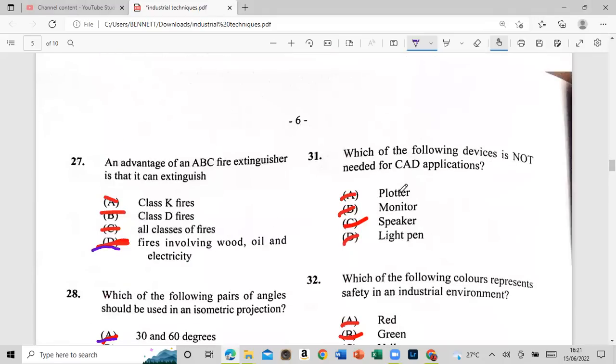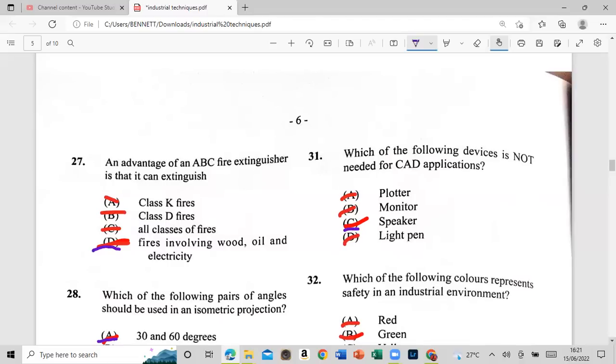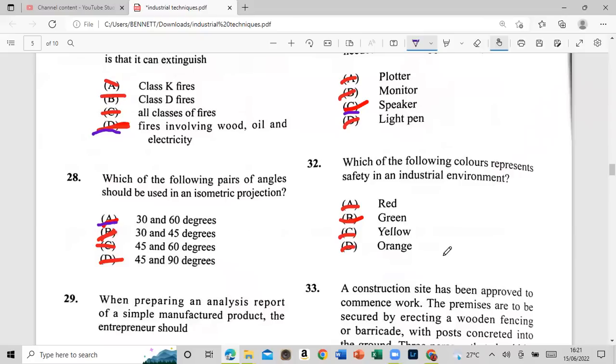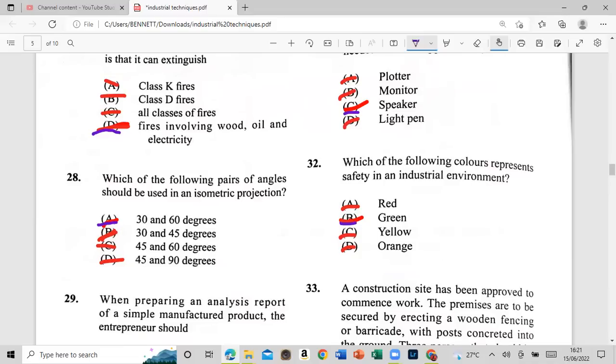Which of the following devices is not needed for a CAD application? This is the plotter, the monitor, the speaker, or the light pen. All right, we should be finished by now. It's the speaker. Very two. Which of the following colors represent safety in an industrial environment? Red, green, yellow, orange. That is color green, red tree.